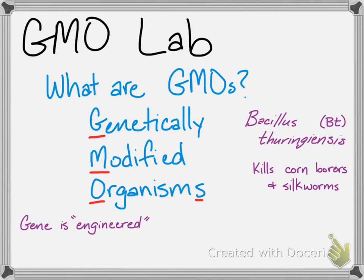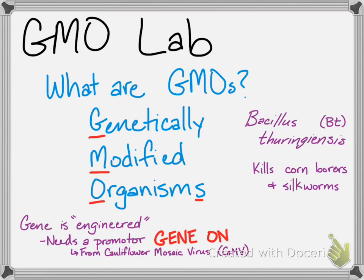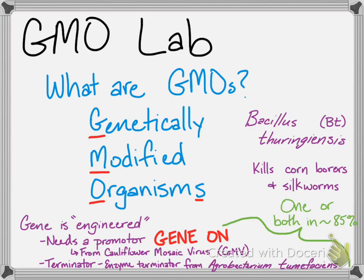What does that mean? It means the gene needs to be changed in such a way that it is actually transcribed in the new organism. It's going to need a new promoter — promoters in general turn genes on — and that promoter for plants is from the cauliflower mosaic virus. It also needs a terminator; in this case we're looking for an enzyme terminator from Agrobacterium tumefaciens. One or both of these changes to the BT gene are found in about 85% of genetically modified plants. So the promoter and the terminator are the two regions we're going to be searching for in this lab.